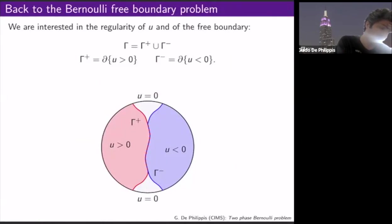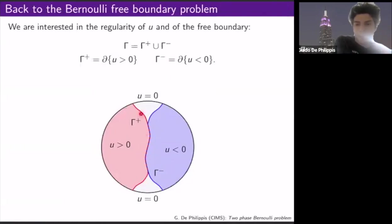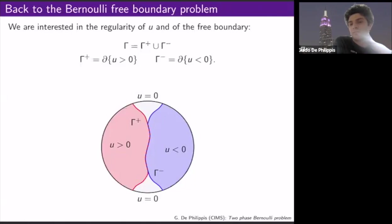We are interested in the regularity of the free boundary, which is the union of the positive and negative free boundaries. The positive free boundary is the boundary of the set where U is positive; the negative free boundary is the boundary of the set where U is negative. From the simulation, you expect these two free boundaries to be smooth, or at least C^1, and to touch tangentially at branch points.